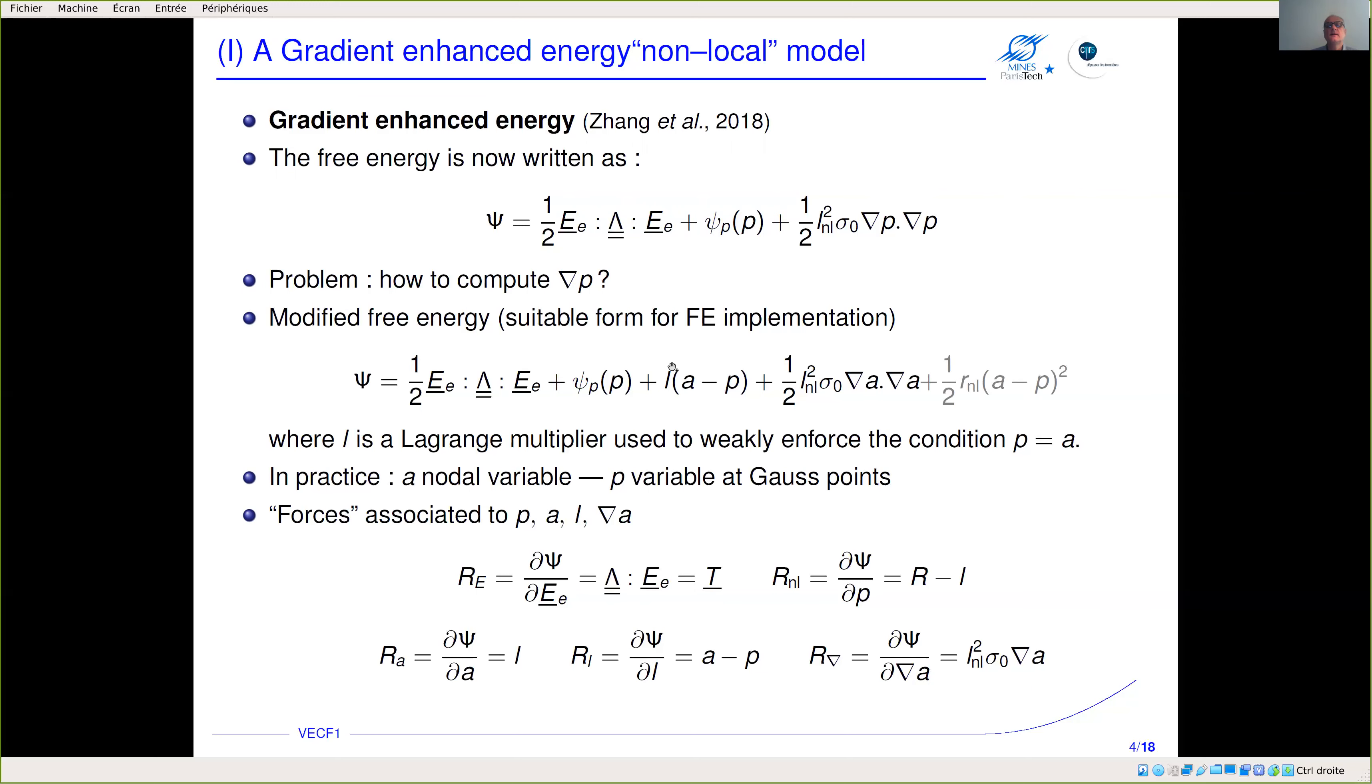The Lagrange multiplier n will enforce the condition p equals a in a weak sense. Now because a is known at nodes we can compute the gradient fairly easily. If we follow a thermodynamic procedure, I will introduce the variable which is associated to the plastic strain where you have r, which is the derivative of phi—the standard flow stress—minus the Lagrange multiplier. This introduces the non-local regularization.